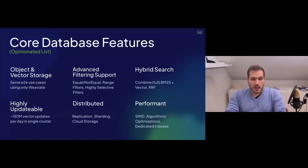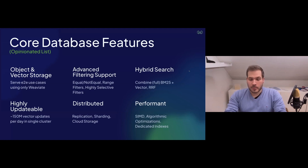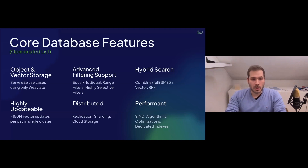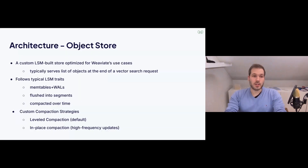Speaking of scale, Weaviate supports data replication, data sharding, and offloading data to cloud storage for cost-performance trade-offs. From a performance perspective, there are lots of optimizations both on an algorithmic level and SIMD optimizations — those distance calculations parallelize really well using SIMD — and there are dedicated indexes too, which I'll show in a second.